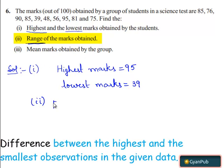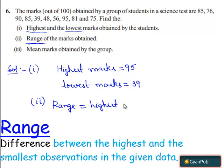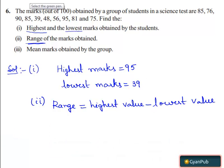We know that range can be obtained by subtracting the lowest observation from the highest observation. Range is equal to highest value minus lowest value. Here the highest value is 95 and the lowest value is 39.